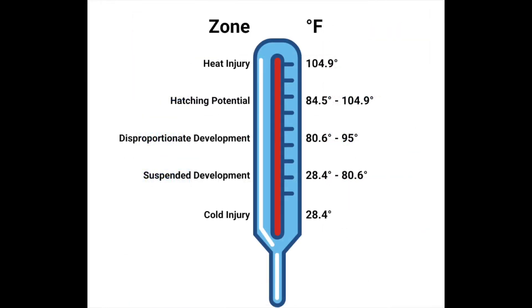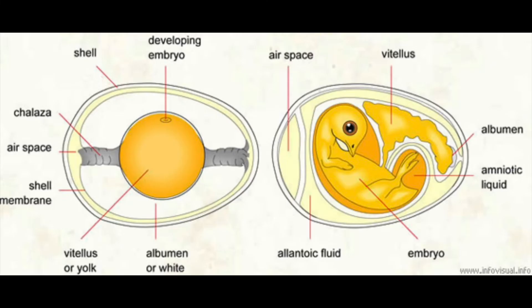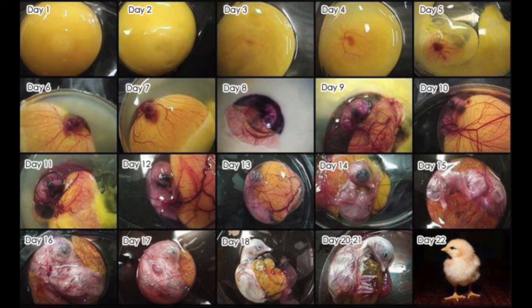These features allow you to monitor the temperature and humidity within the incubator. Embryos are very sensitive to temperature, so it is crucial that the temperature remain constant. The humidity affects the air bubble within the eggs, which is very important, particularly during the hatching phase.